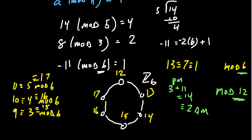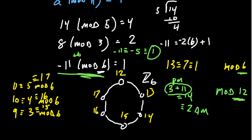Coming back to the negative expression: for negative 11 mod 6, we can just keep adding 6 to it. Negative 11 plus 6 gives negative 5, and adding 6 again gives 1, which is between 0 and 5 — that's the remainder we want. Any number can be adjusted by adding or subtracting multiples of the modulus to find the remainder. This also suggests we can do addition, subtraction, multiplication, and division with various moduli.